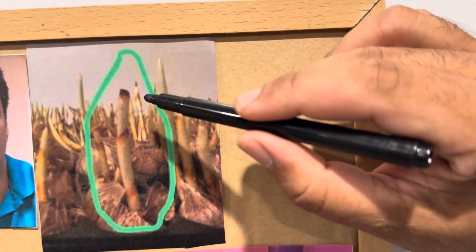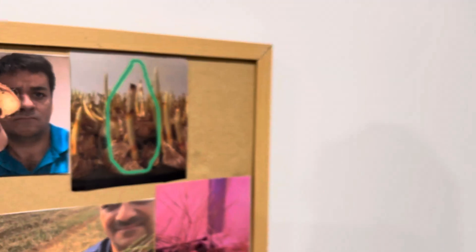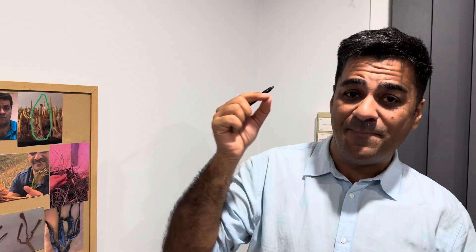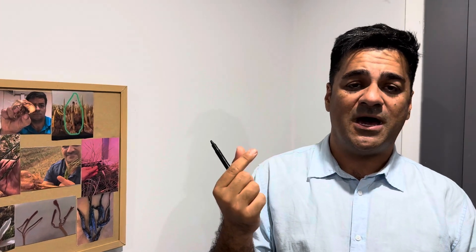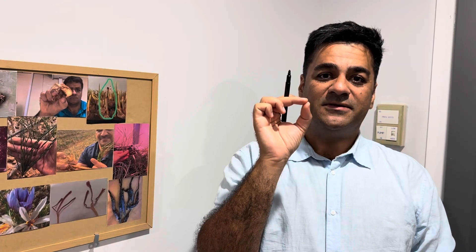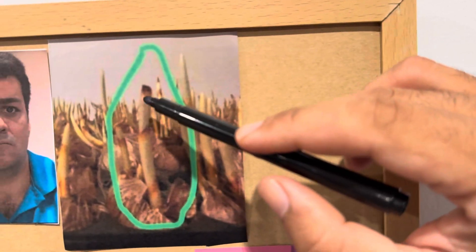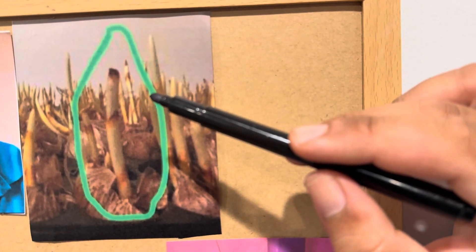The saffron sprout starts to burn at the tip. The main reason is light placement. In saffron vertical farms, installing lights between shelves is a common mistake. Sometimes the distance between the light and the sprout is only 20–30 centimeters — close enough to burn the top of the sprout, killing the flower inside. I do not recommend installing lights between shelves; there must be a suitable distance.